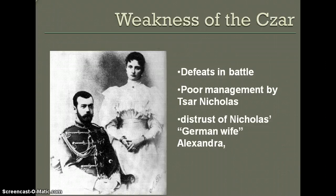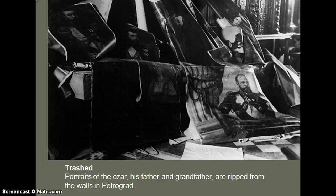In addition, his wife was German, so Russians naturally distrusted the Tsar since they were fighting the Germans. As the revolution started, portraits of the Tsar, his father, and his grandfathers were ripped from the walls in Petrograd. The Tsar was the last of the Romanov dynasty.